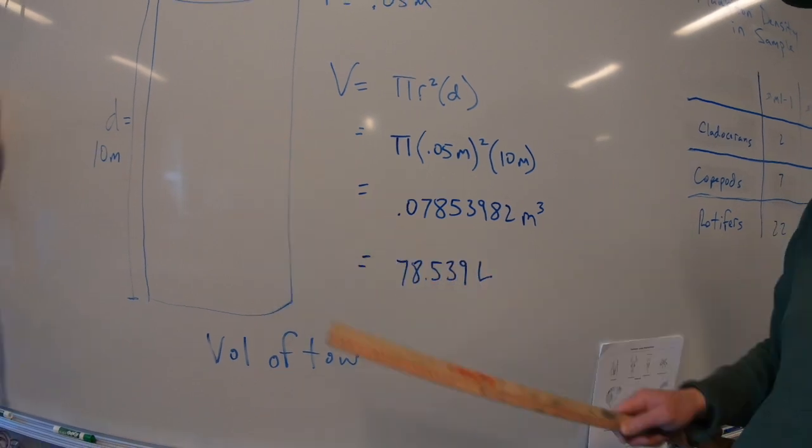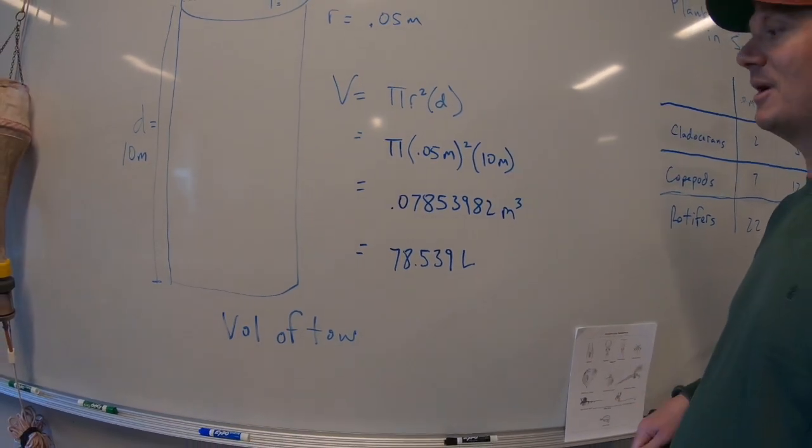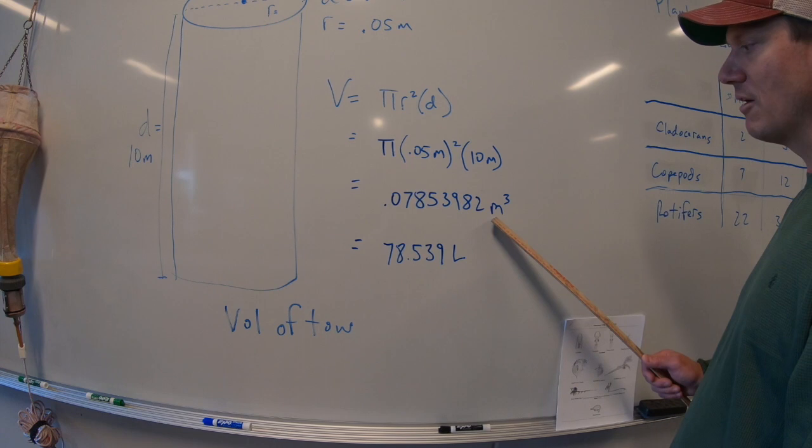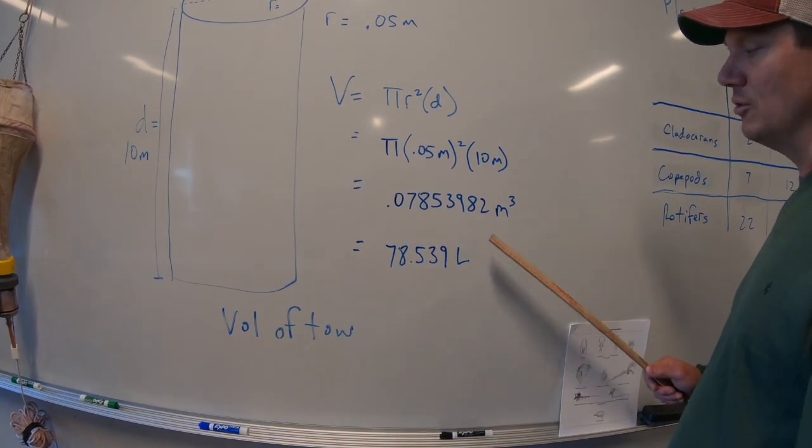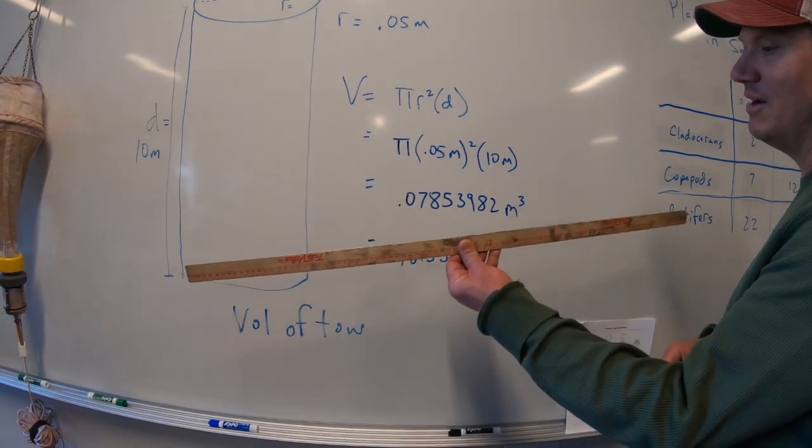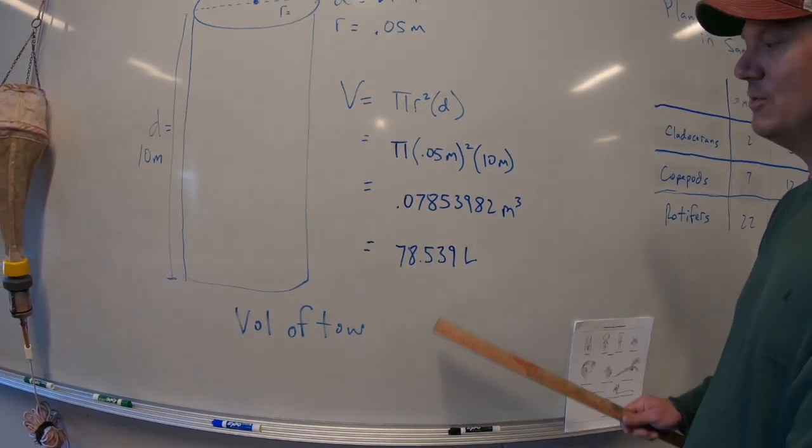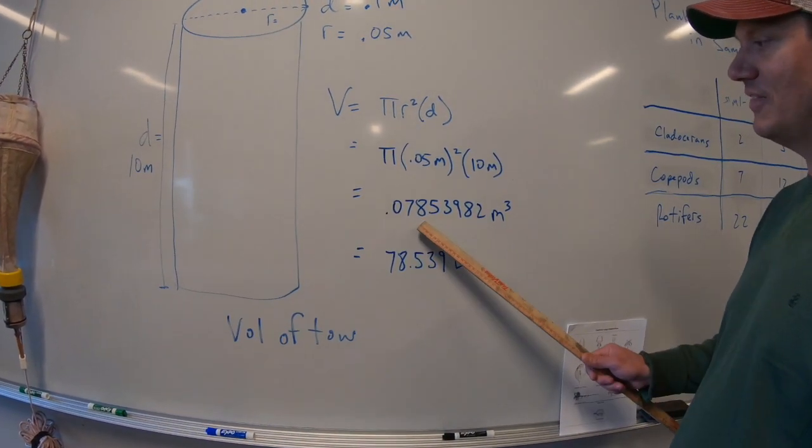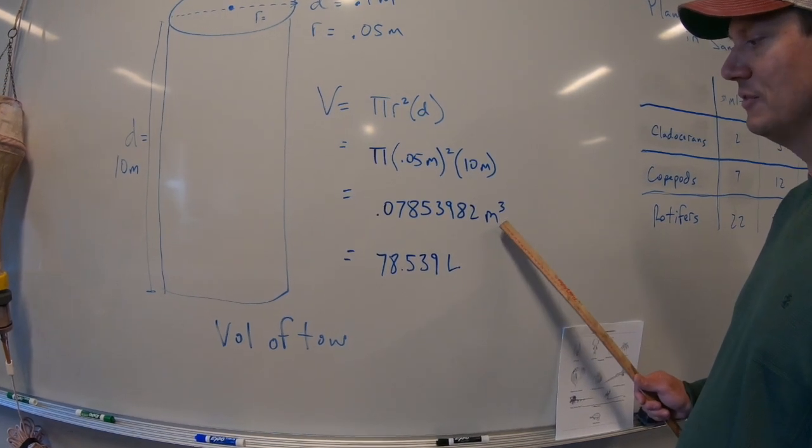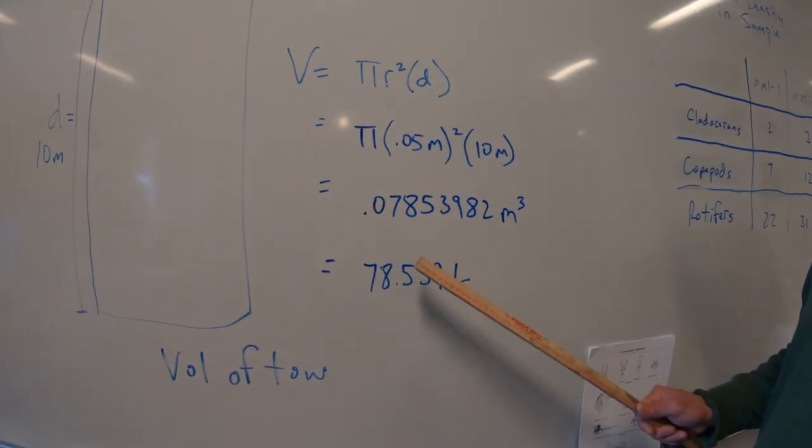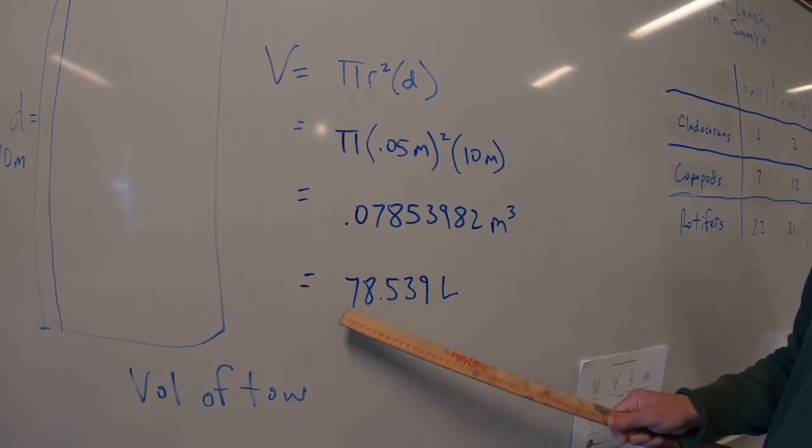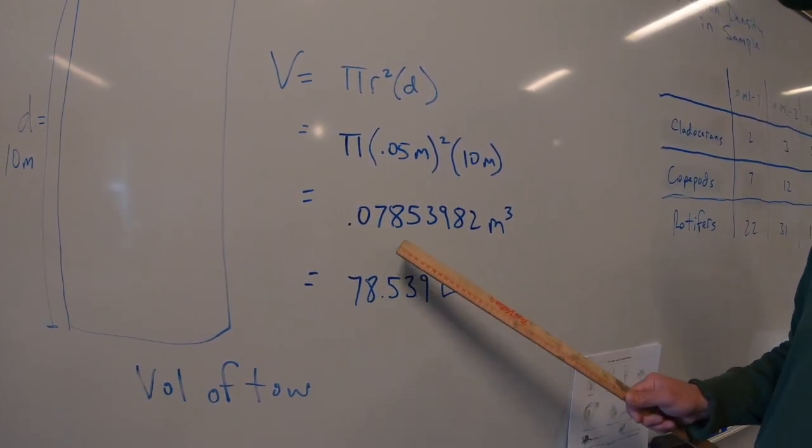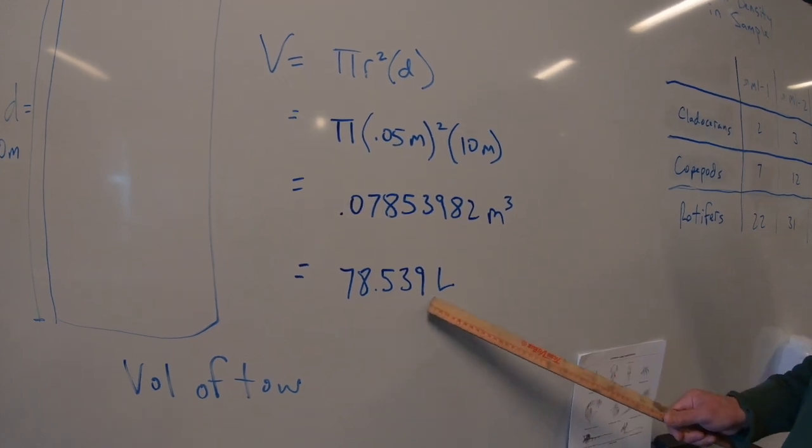And one thing that's really nice about the metric system, right, is we can convert meters to liters really easily. In one meter cubed or a box that is one meter by one meter by one meter, you can fit 1,000 liters. So if you take this number, multiply it by 1,000, you'll get the liters. Or in my case, I just moved the decimal point 1, 2, 3. So that would be 78.539 liters.